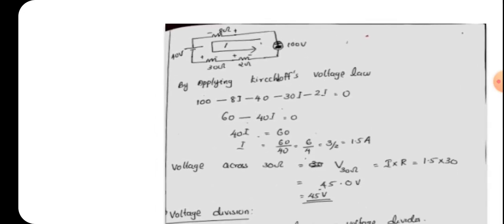With the redrawn circuit, we can now solve for current I. Since it is a series circuit containing voltage sources and resistors, we apply Kirchhoff's Voltage Law following the marked current direction. The KVL equation is: 100 minus 8I minus 40 minus 30I minus 2I equals 0.